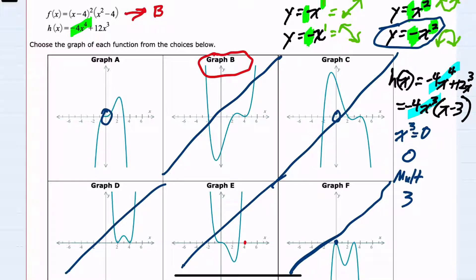I've eliminated everything except for graph A. So I know that that would be my choice. But if I were to continue, my second zero would happen where x equals 3. And that is, of course, also on graph A.